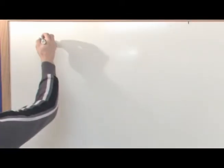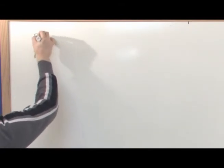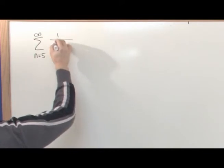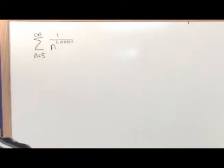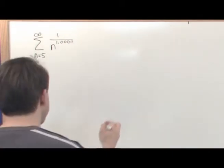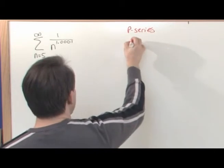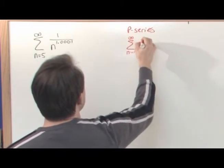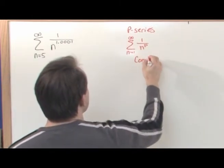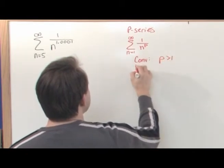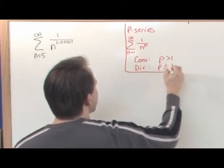The next problem is the sum from n equals five to infinity of one over n to the 1.0001. That is the series. We're going to be using the p-series quite a bit in this section, so I'll write it down. The p-series is when the sum from n equals one to infinity of one over n to the p. It converges for p greater than one and diverges for p less than or equal to one.